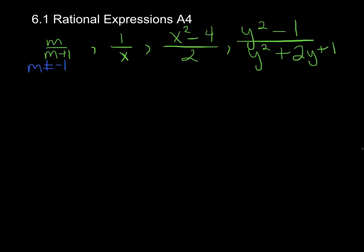In this second example here, we've got 1 over x, and if x is 0, well, that's going to make it undefined, right? So we say that x cannot be equal to 0.